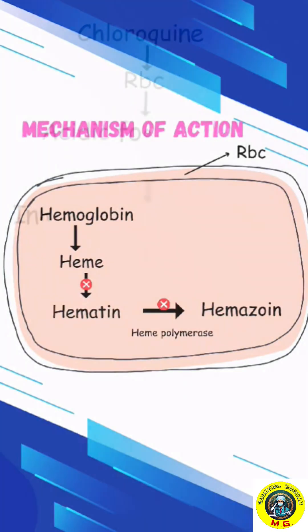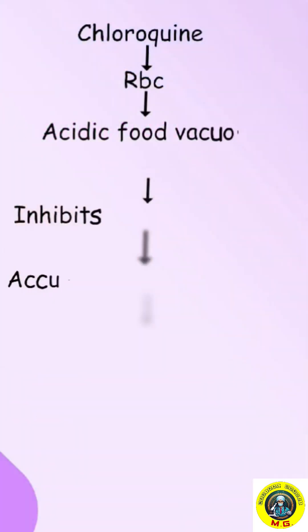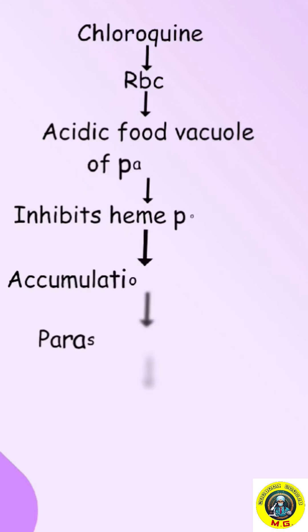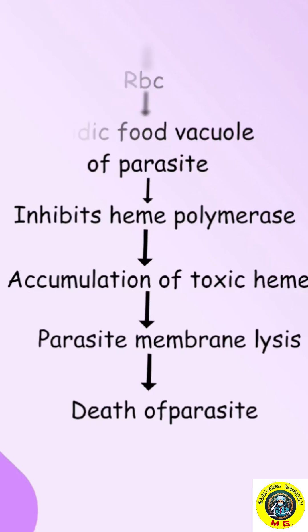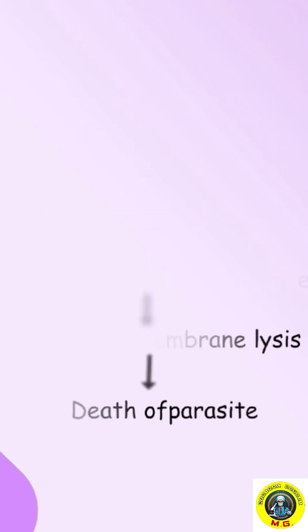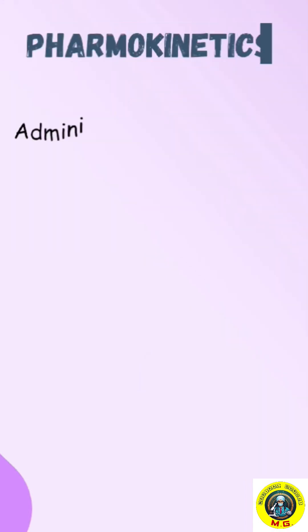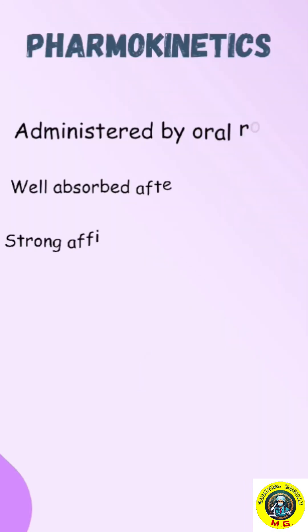Mechanism of action: Chloroquine acts on RBCs in the acidic food vacuole of parasites and inhibits the heme polymerase enzyme, leading to accumulation of toxic heme in the parasite, causing membrane lysis and death of the parasite.